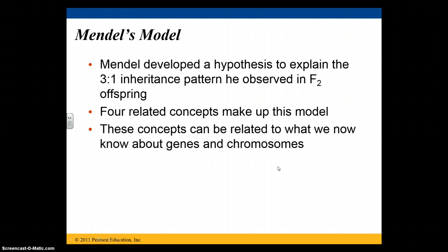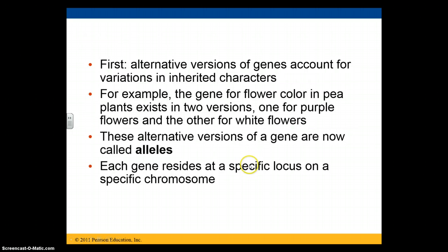Mendel developed a hypothesis to explain the 3 to 1 inheritance pattern in the F2 generation, built on four concepts. First, there are alternative versions of genes that account for variations in inherited characters — for example, two versions of the gene for flower color: purple and white. We now call those alleles. Each gene resides at a specific locus or location on a specific chromosome.